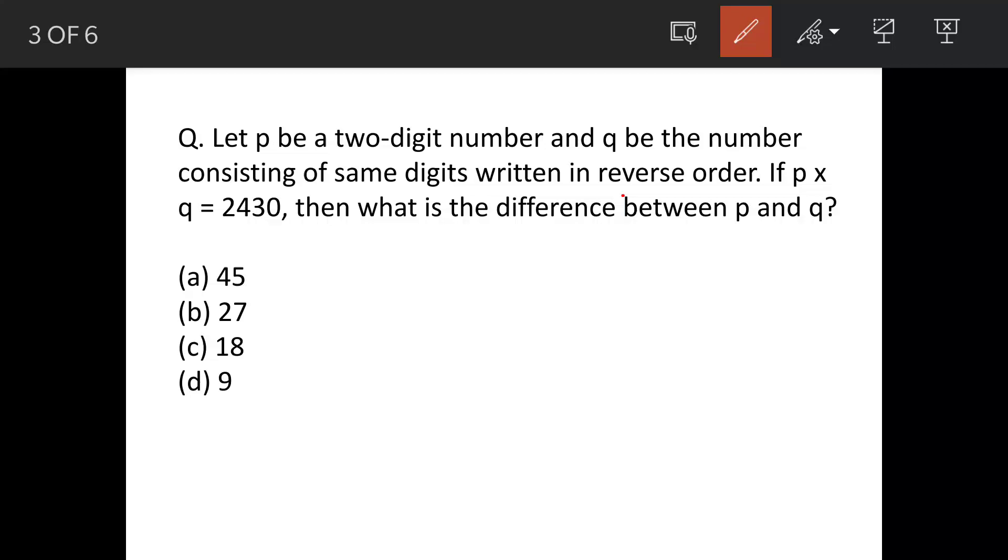There are two numbers p and q. P is a two-digit number and q is the number consisting of the same digits but written in reverse order. So if p is 25, that means q will be 52. This is what they are meaning.